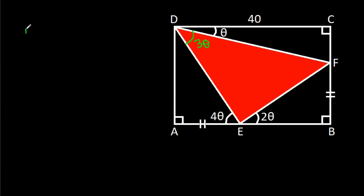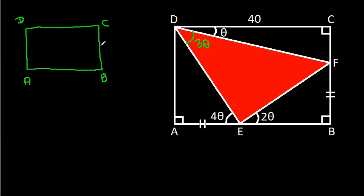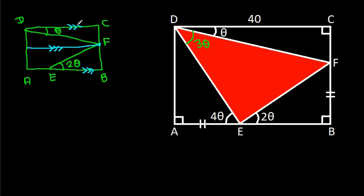Now in ABCD, this point is F and this angle is 2 theta, this angle is theta. If we draw a line from point F that is parallel to AB and CD, this angle is 3 theta and this angle is 3 theta. Then this angle is theta, so this angle will be 2 theta, making this angle theta plus 2 theta, that is 3 theta.